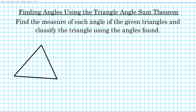Let's take a look at question number one. Let's say we have triangle ABC. The measure of the angles are given by the following expressions: angle A is x plus 20, angle B is 3x minus 55, and angle C is 2x plus 5.